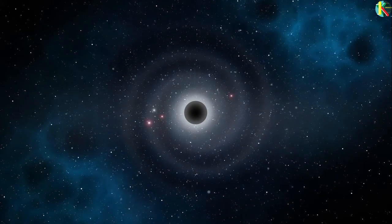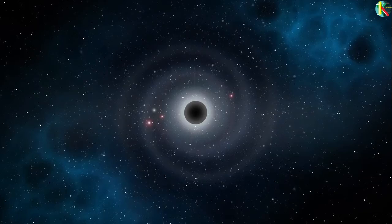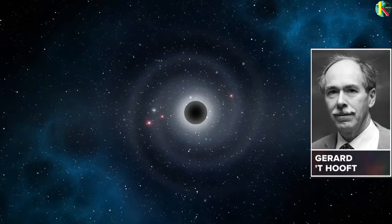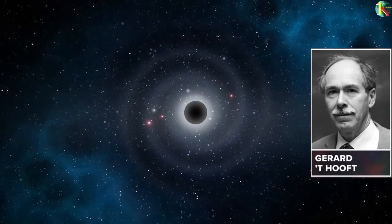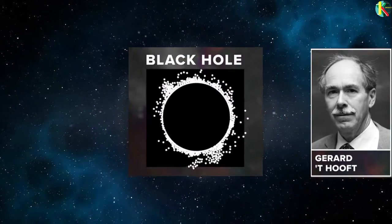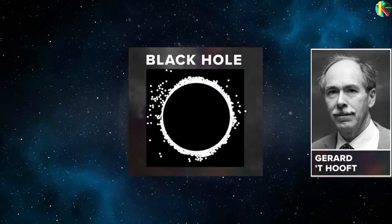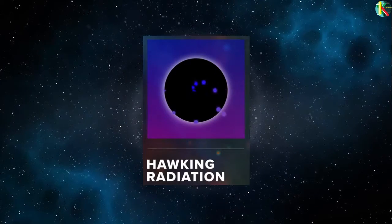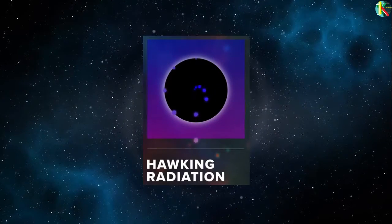Eventually, a possible resolution to this paradox was found by Gerard 't Hooft. He described a mechanism by which the information contained by in-falling particles could be preserved on the event horizon of the black hole. From there, it could be imprinted on the outgoing Hawking radiation allowing the information to escape back into the universe.